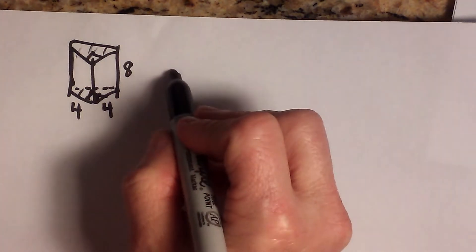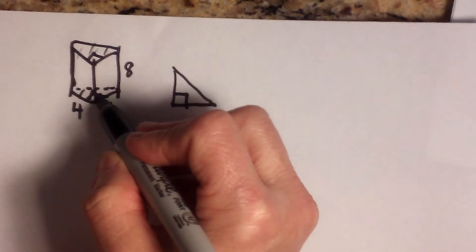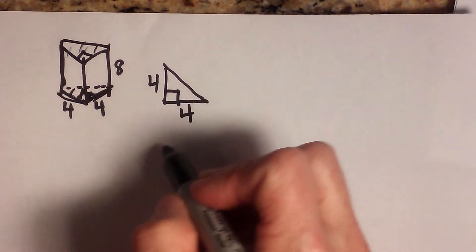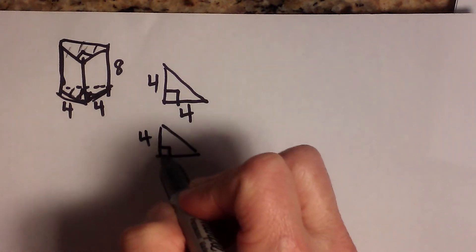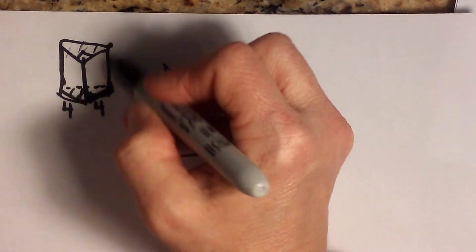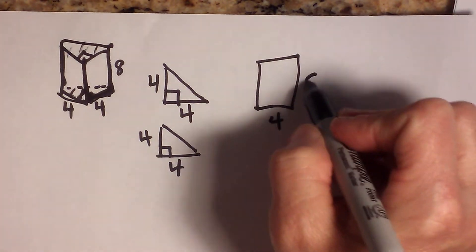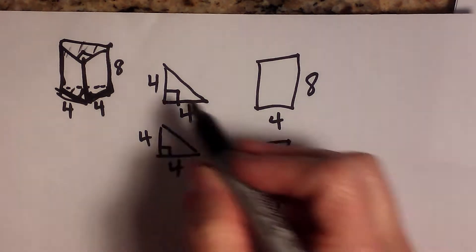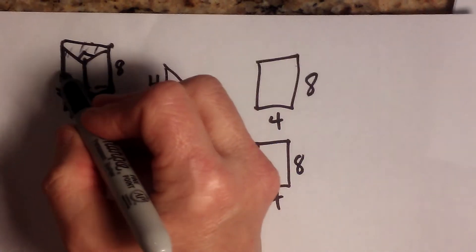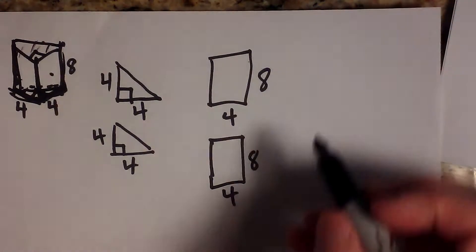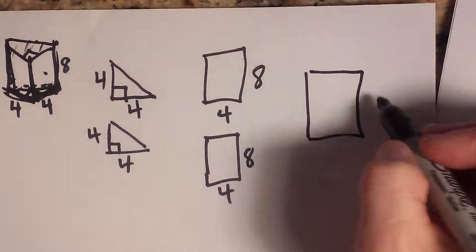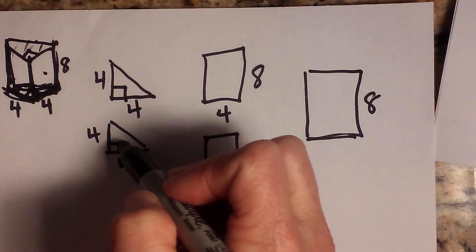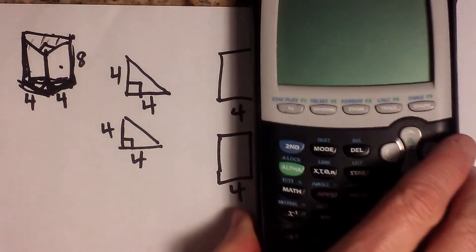The top and bottom are both right triangles — specifically isosceles right triangles where both legs are 4. We have two of those. The two side faces are rectangles: 4 by 8, and there are two of them — one on each side. That accounts for four of the five faces. For the fifth face — the large rectangle on the back — we know the height is 8, but we need to find the width, which is the hypotenuse of the right triangle.